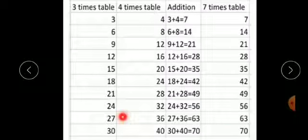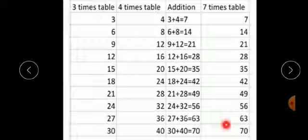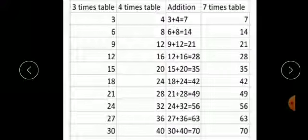21 plus 28 gives 49, so 7 sevens are 49. 24 plus 32 gives 56, so 7 eights are 56. 27 plus 36 gives 63, so 7 nines are 63. 30 plus 40 gives 70, so 7 tens are 70. In this way we can write the 7 times table by adding the 3 times and 4 times tables. Also, 6 plus 1 equals 7, and 5 plus 2 equals 7, so the 7 times table can also be made by adding the 6 and 1 times tables or the 5 and 2 times tables.